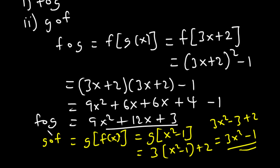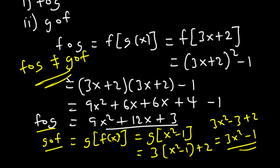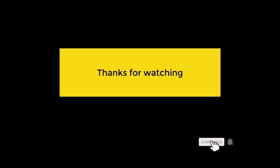So it is clear that f(g(x)) is not equal to g(f(x)), which means that f of g and g of f are not commutative. That's it for today's video. If you like the content, feel free to like, comment, and share. Don't forget to subscribe to receive more interesting videos. Hope to see you in the next video, bye!